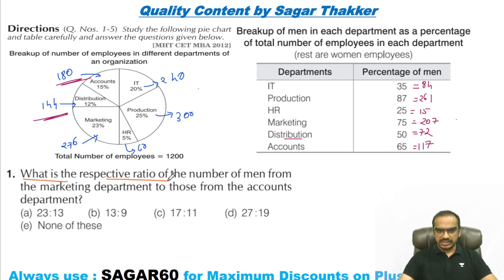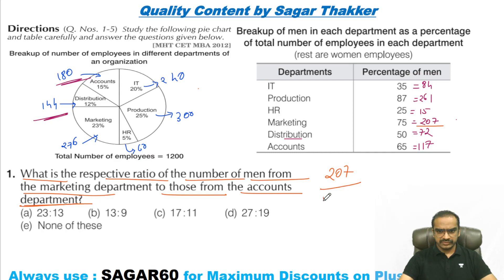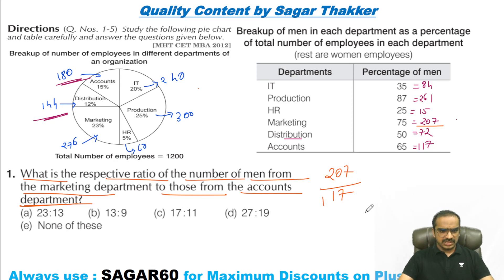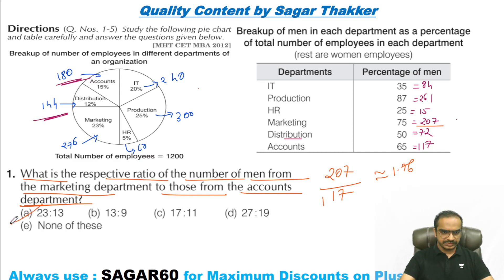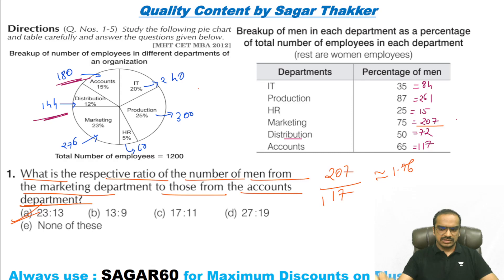What is the respective ratio of number of men from the marketing department to those from the accounts department? Marketing department is 207, and accounts department is 117. So 207 to 117 — divisible — that is approximately 23 to 13. 23 to 13.